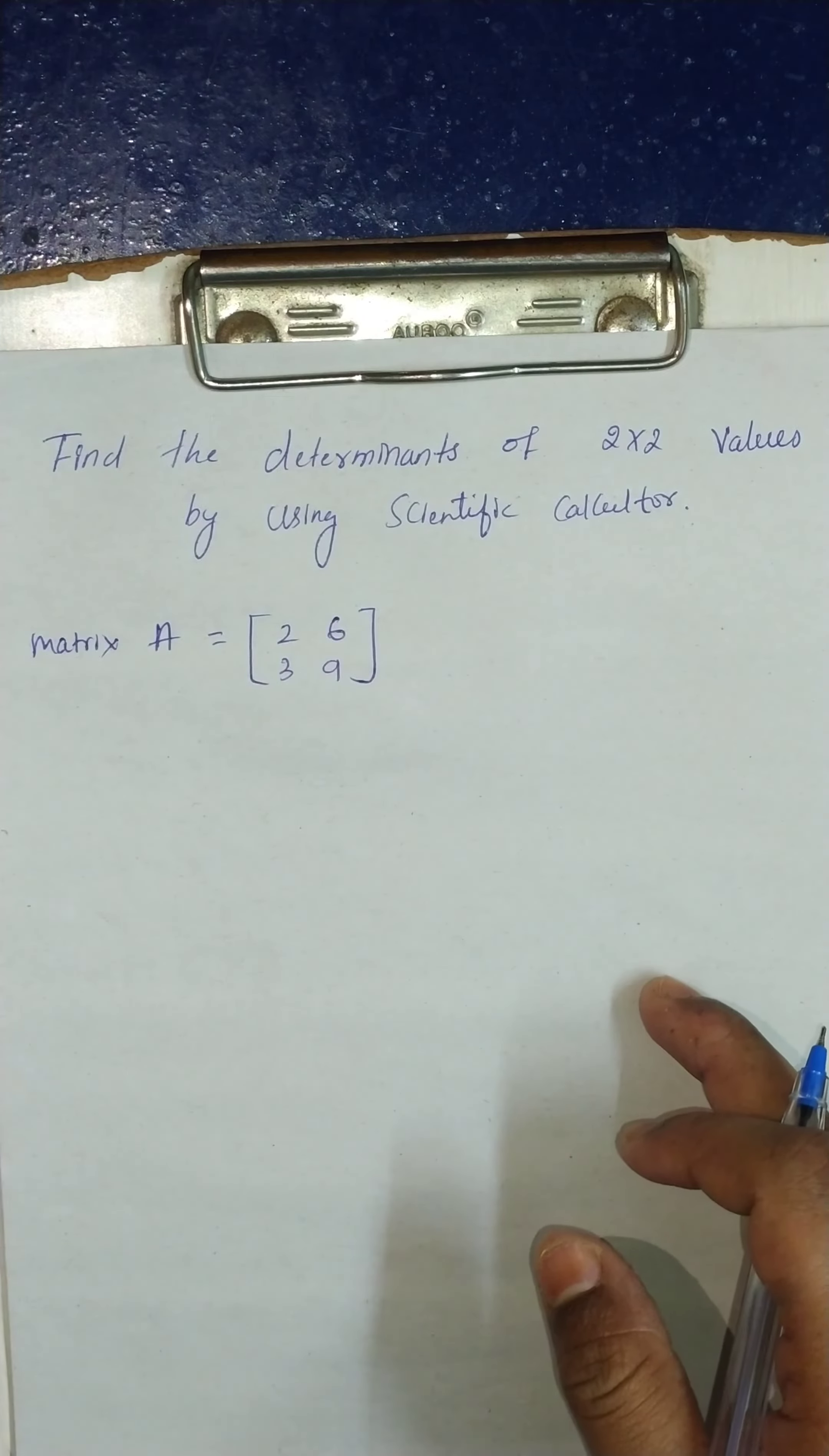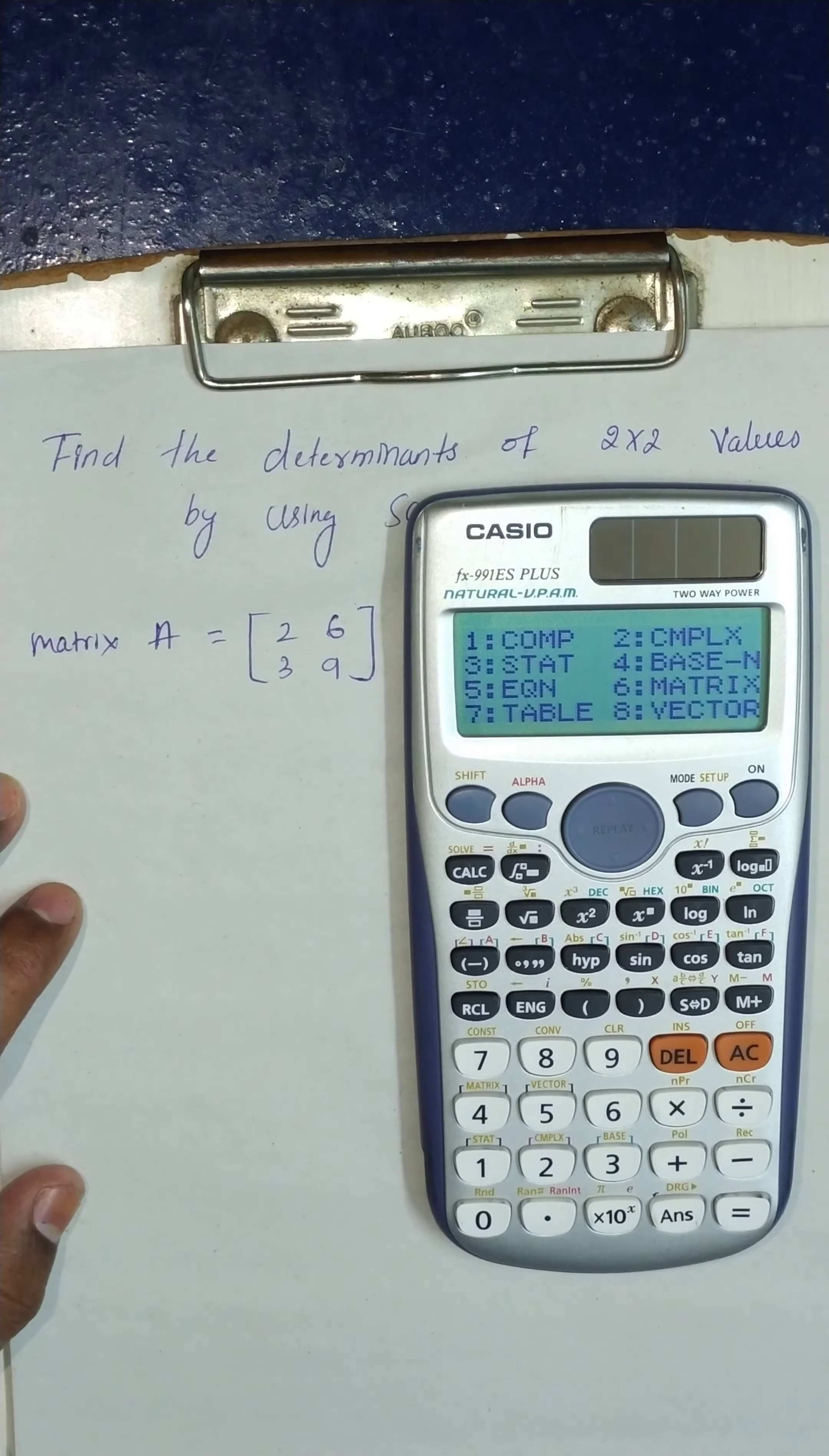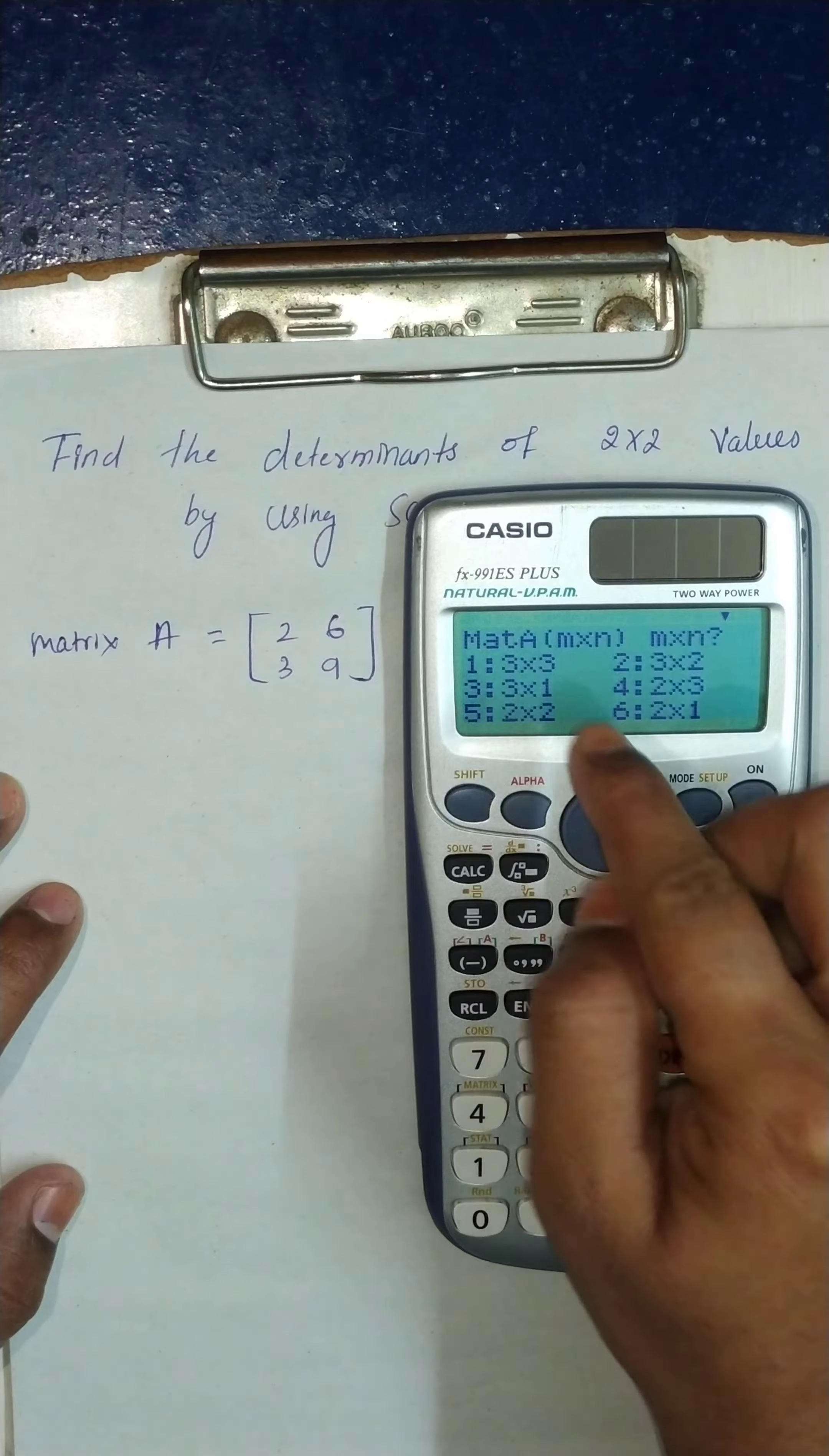In the calculator, how do we find the determinant of these values? Let's check it. First press mode, then press 6 and press matrix A. For matrix A, press 1. For a 2 by 2 matrix, press 5.